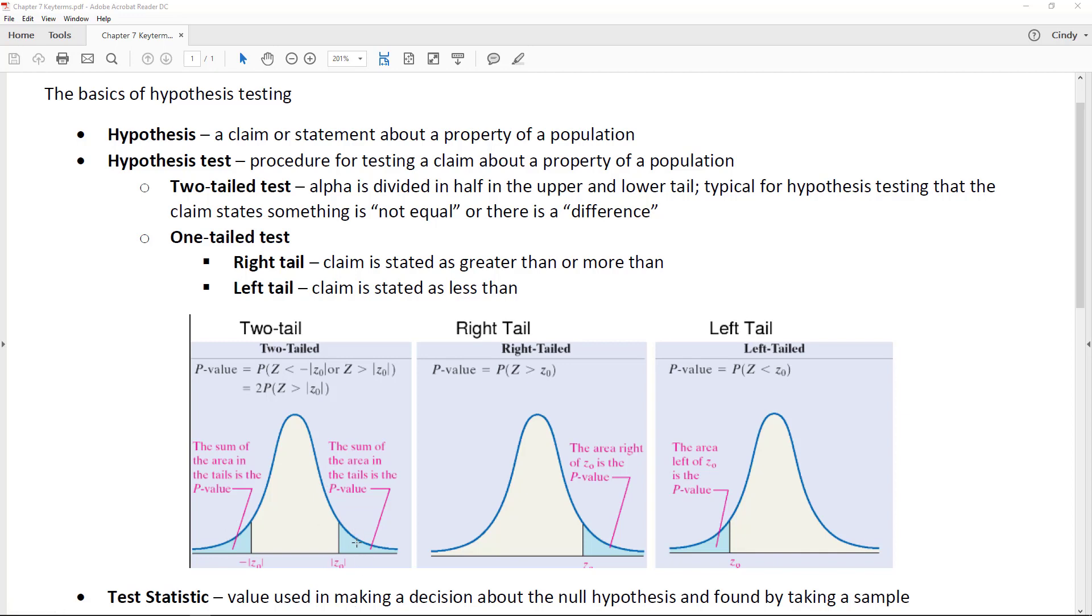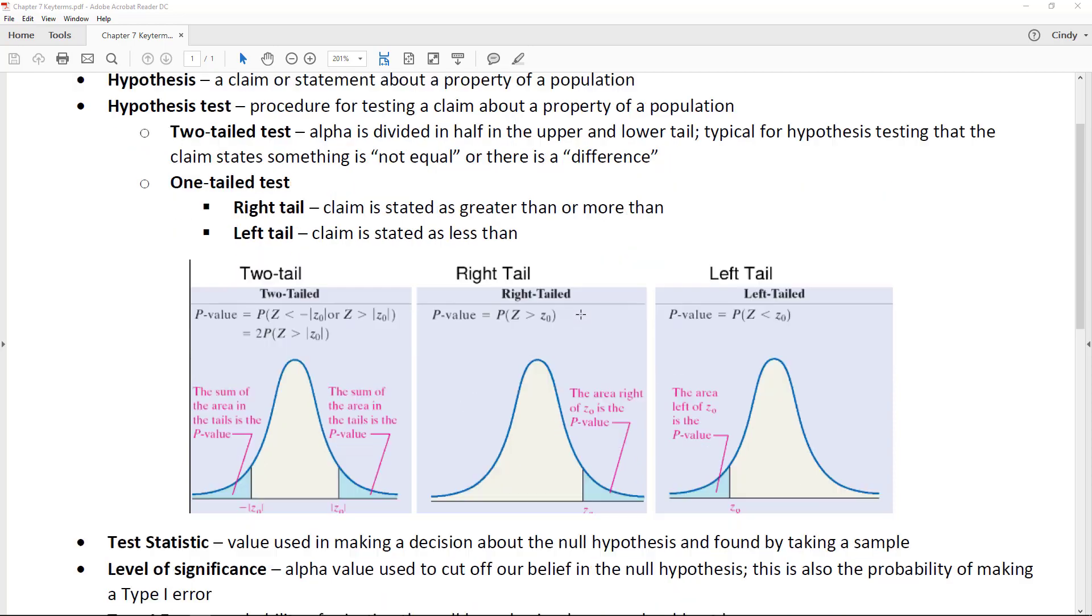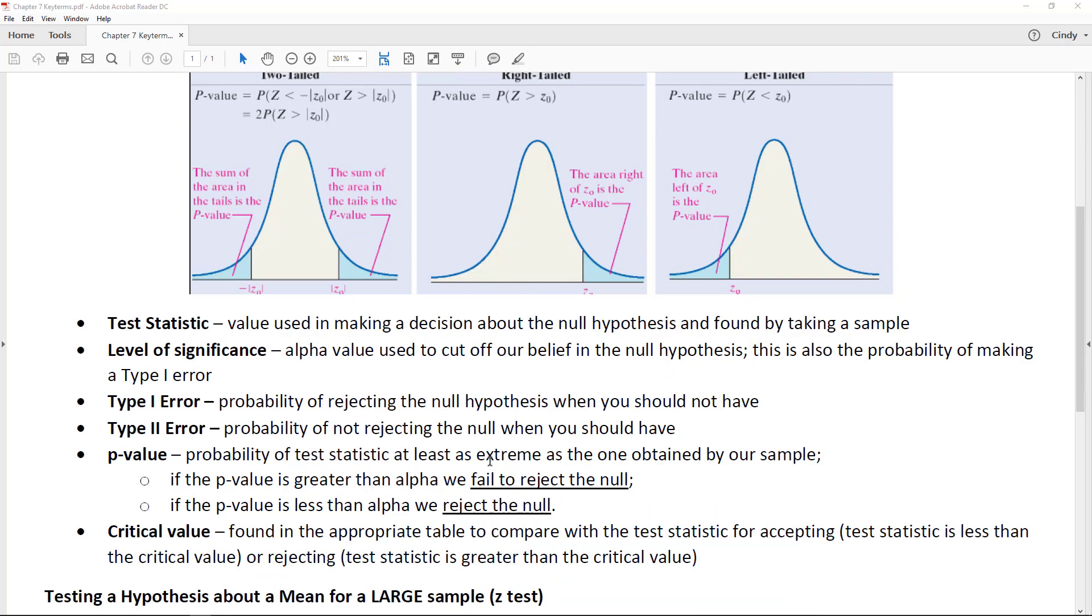A one-tail test is if we only care if they're overfilling the chip bags or underfilling the chip bags. Right tail is greater than, left tail is less than. Basically what you do—there's a procedure—let's go back to the bag of chips.